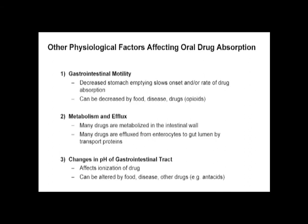pH of a drug and pH of its environment affect ionization, which in turn affects absorption. Non-ionized drugs are more lipid-soluble and diffuse across cell membranes more easily. This is a key principle when considering drug absorption at different GIT sites.